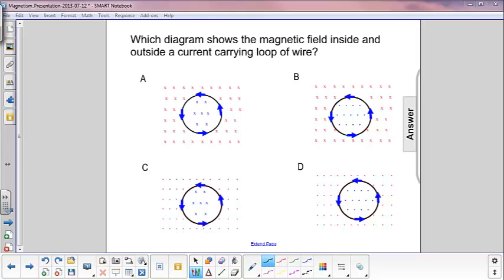Which diagram shows the magnetic field inside and outside a current-carrying loop of wire? The first thing we remember is that the directions are different inside the loop and outside the loop.